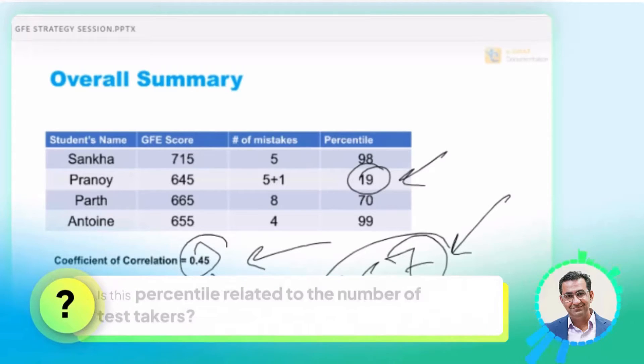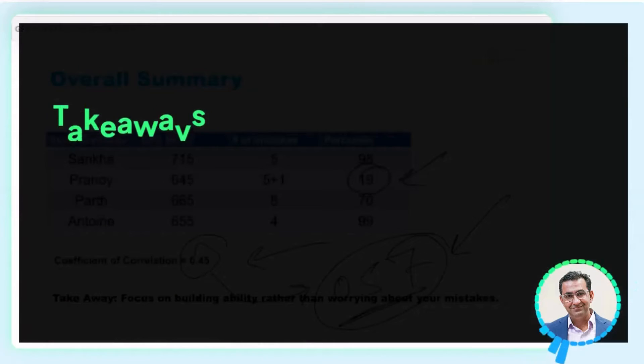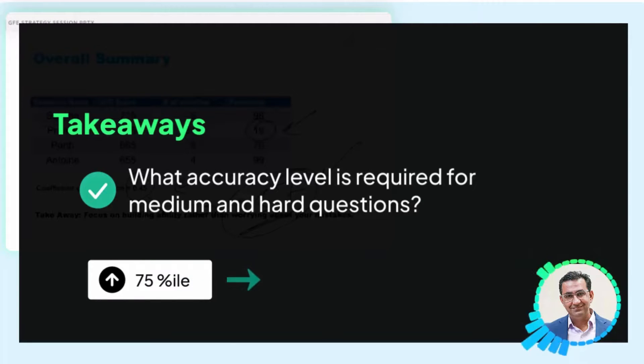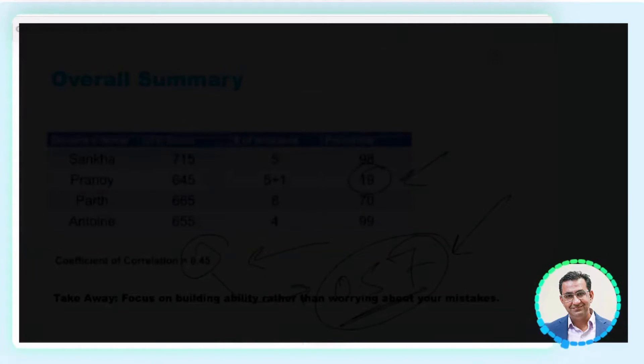Is the percentile related to number of tests? Yes, it is. It's related to your peers, but it's a reasonably constant term. Now, the key takeaway from this is again, remember the first section we talked about what accuracy do you need in medium and hard questions. You want to achieve a certain percentile, and if you want to achieve a percentile that 75th percentile or above, you almost needed a 90% accuracy in medium questions. And then it will be hard questions that matter. So focus on building that ability to get there rather than worrying about your pure accuracy.